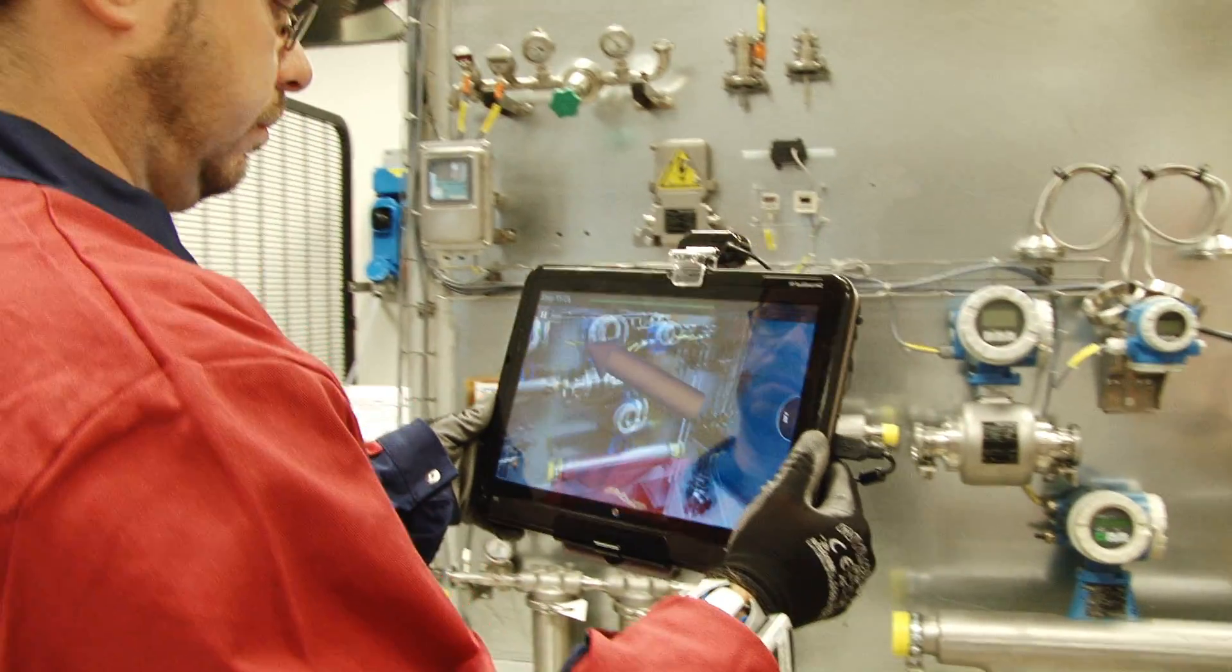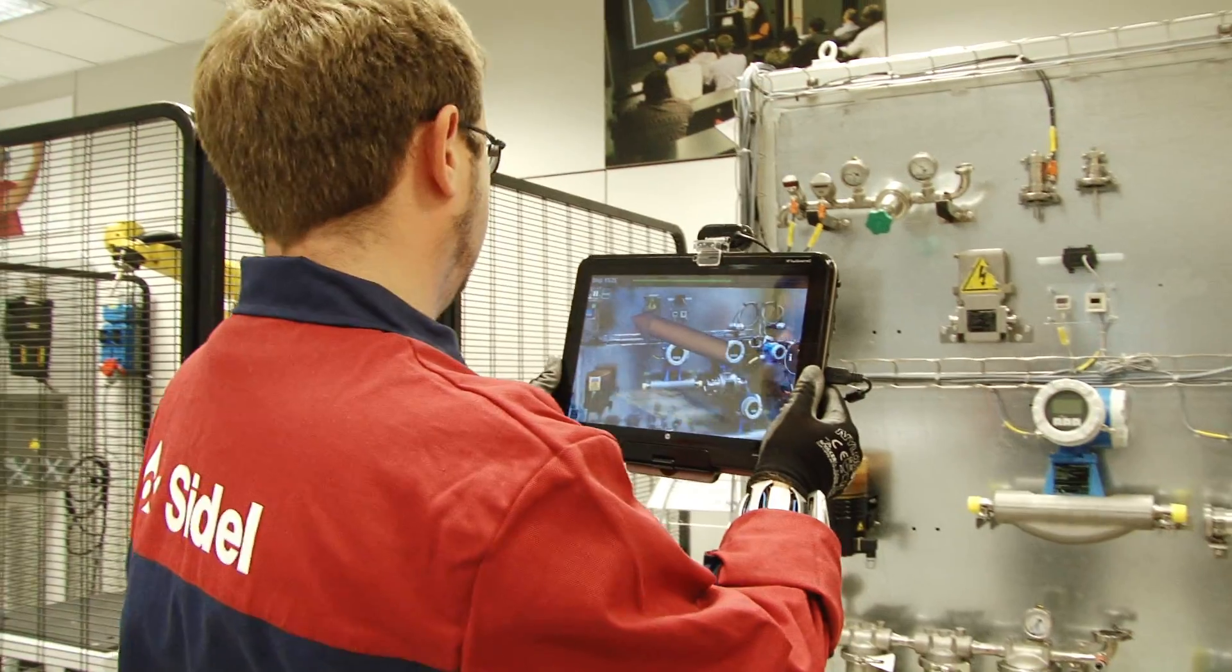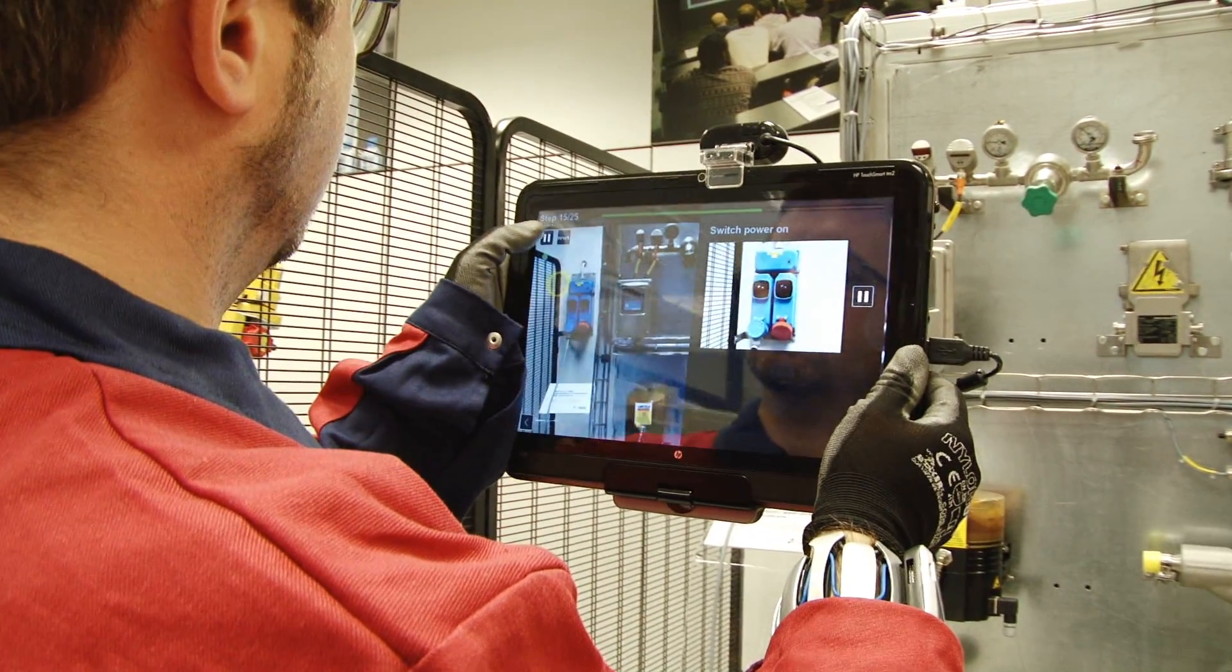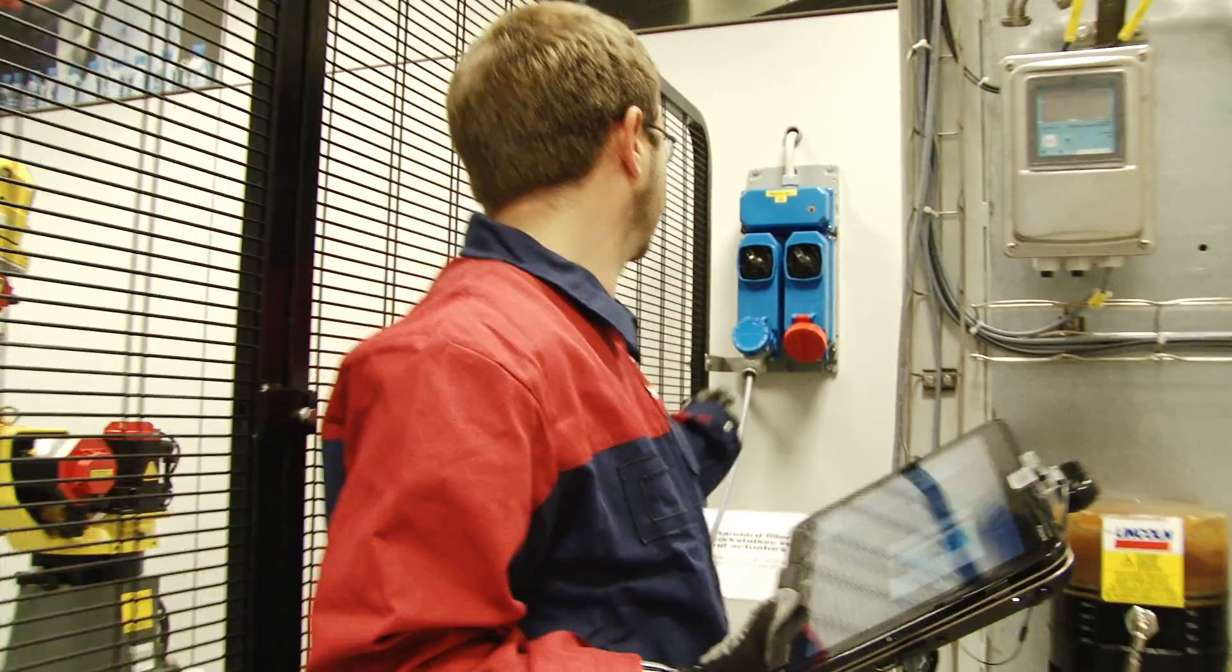For the visualization of this concept, we apply the virtual post-it metaphor. This means that we are linking assembly instructions directly to the specific machine parts, like attaching virtual post-its to the machine parts. The post-it icon is tracked, that is, it remains attached to the real object.